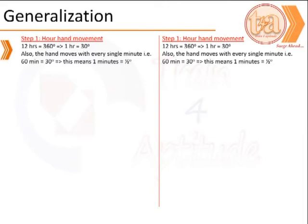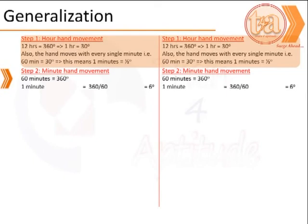To generalize, the first step is to calculate the hour hand motions. Note that for every hour it covers 30 degrees, and for every minute it covers half a degree of motion. The next step is to calculate the minute hand movements. For every minute it covers 6 degrees.